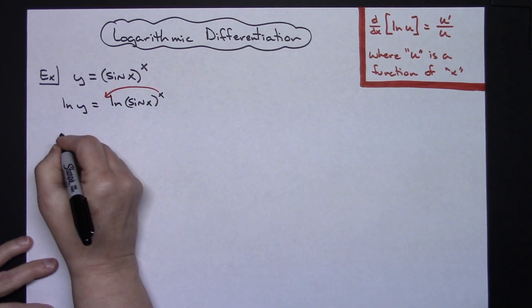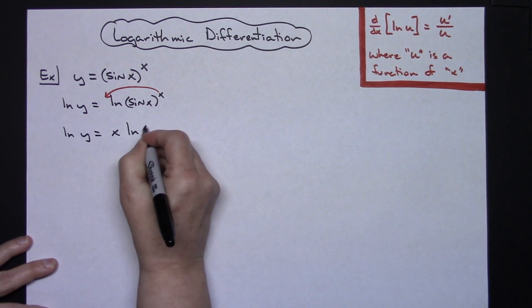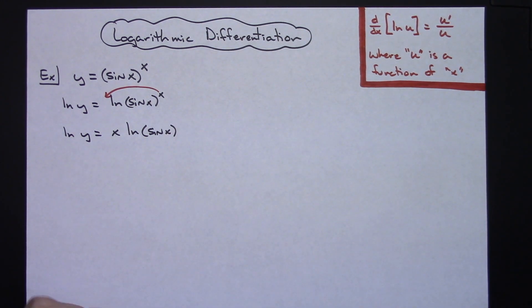Now I'm going to apply some log rules here and I'm going to bring that x down in front. So then I'm going to have the natural log of y equals x times the natural log of sine x.